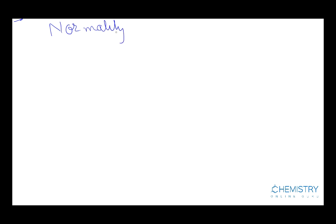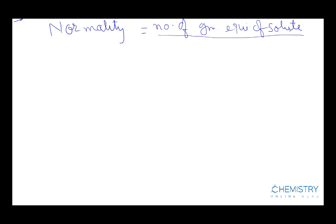Today we will discuss about methods of concentration. There are so many methods of concentration. Today we will discuss about normality. Normality is the number of gram equivalents of solute present in 1 litre of solution. It means number of gram equivalents of solute divided by volume of solution, where volume of solution is taken in litres.